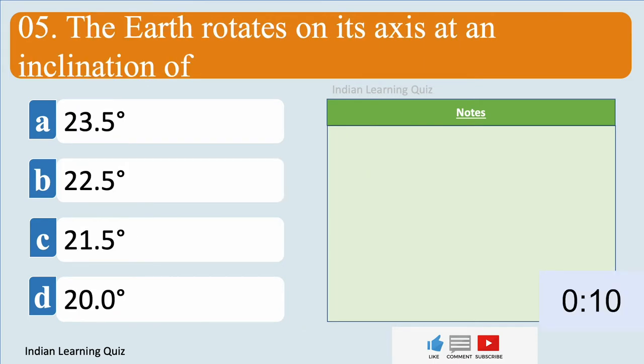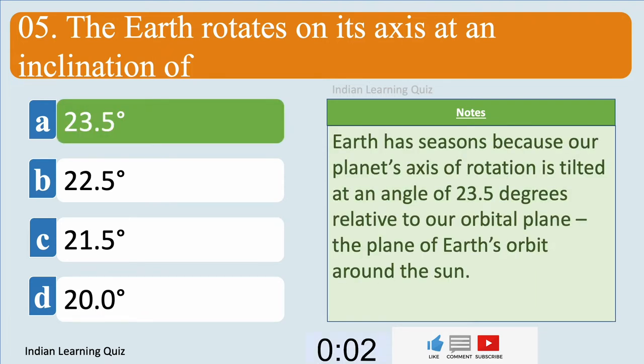The Earth rotates on its axis at an inclination of 23.5 degrees.